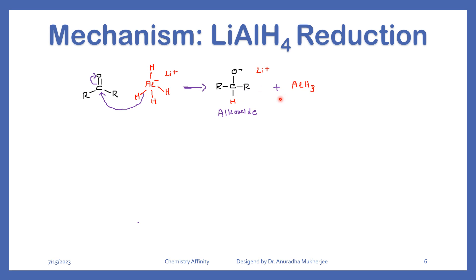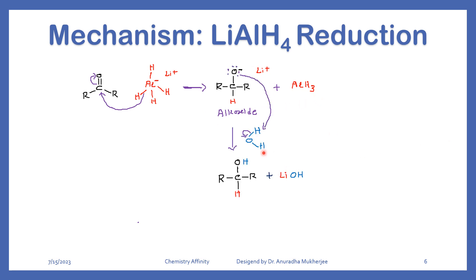Let's explore the mechanism of lithium aluminum hydride reduction. Lithium aluminum hydride is a hydride donor, so H minus attacks the carbonyl carbon — a nucleophilic addition takes place and we get an alkoxide. In the final step we add water, and the O minus abstracts a proton from water to become OH, giving us the alcohol.